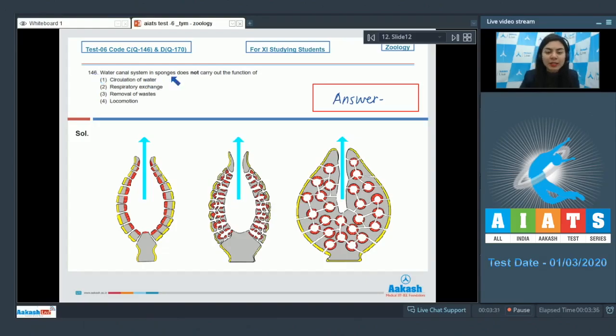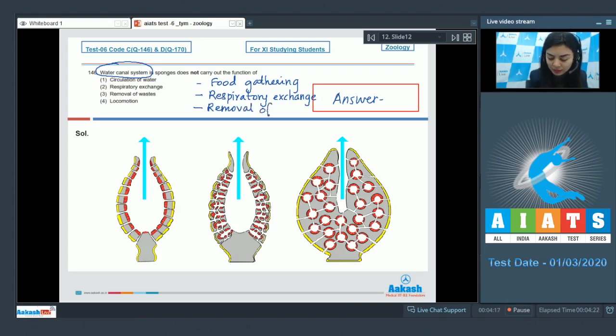Question 146. Water canal system in sponges does not carry out the function of: circulation of water, respiratory exchange, removal of waste, or locomotion. The water canal system in sponges helps in food gathering, respiratory exchange, removal of waste, and transfer of sperms. There is a central cavity called spongocoel and minute pores on the surface called ostia. The ingressing water enters into this central cavity, spongocoel, and leaves its body through this opening called osculum.